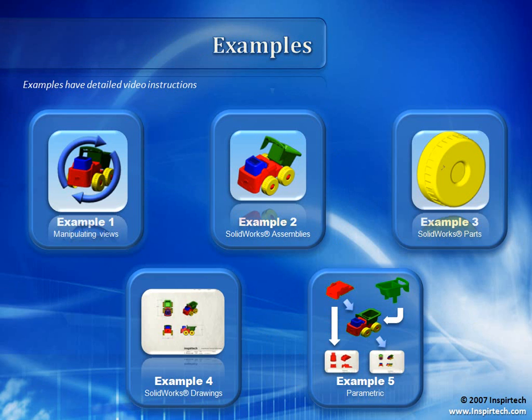To cover the concepts in this lesson, we have five examples. In example one, we'll begin manipulating views within the environment. In example two, we'll open our SOLIDWORKS assembly and look at what an assembly file is. Example three looks at part files. Example four looks at drawing files. And finally, example five displays parametrics and shows how parts and assemblies relate to each other and to drawing files.